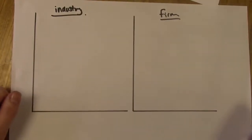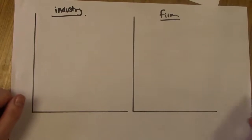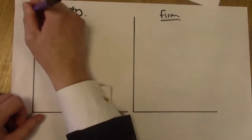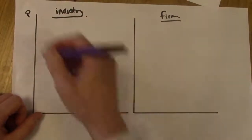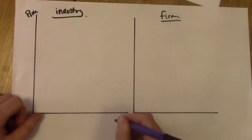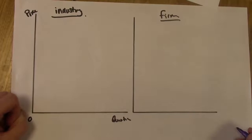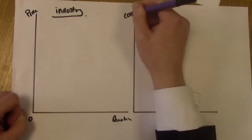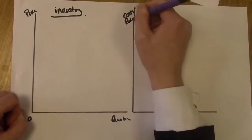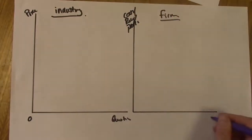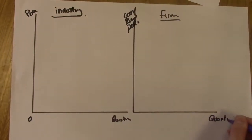It's normally good practice to put the industry on the left-hand side of your two-pin analysis and the firm on the right. Labeling the axes: for the industry we have price and quantity. For the firm we look at costs, revenues, and profit on the y-axis, and quantity on the x-axis.